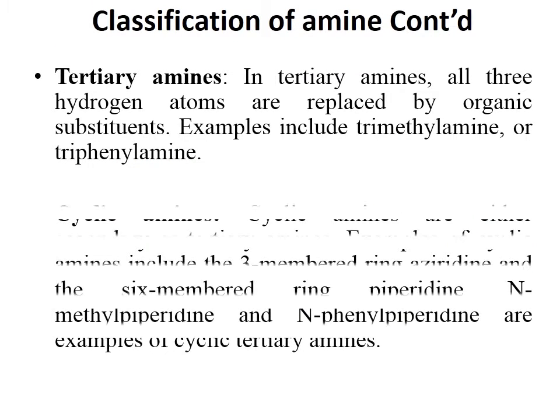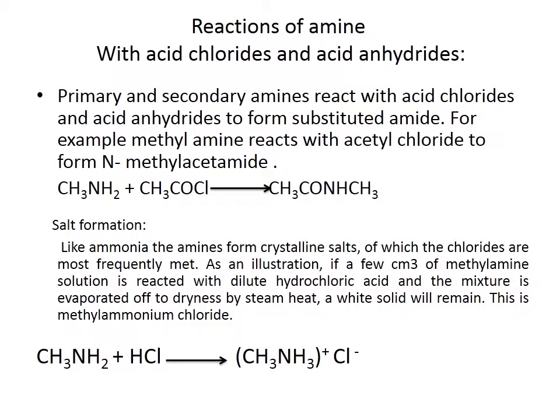We now go into the reactions of amines. Amines have various chemical ways by which they react to form simple or complex compounds. The first reaction is with acyl chloride. A primary or secondary amine reacts with acetyl chloride to form an amide. For example, methylamine reacting with acetyl chloride forms methylacetamide. As you can see from the equation below, this is an example of a primary amine — methylamine reacting with acetyl chloride to form methylacetamide.